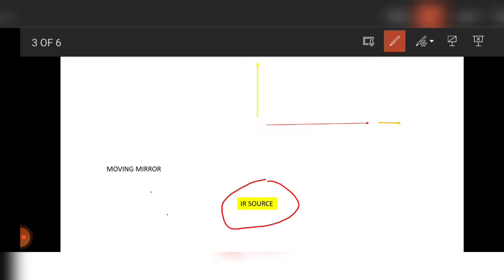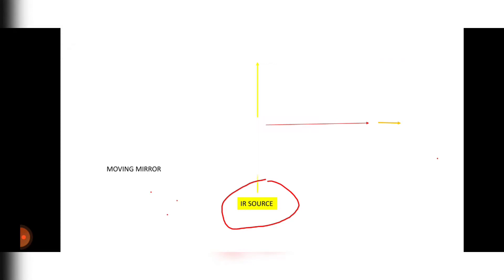In FTIR we will do the mathematical conversion using the mathematical equation. We will simply do the mathematical conversion. The IR source will be there, and from the IR source light will go and it will strike to this divider.